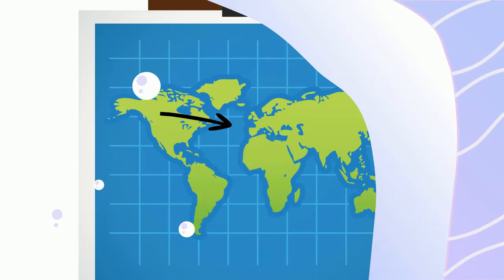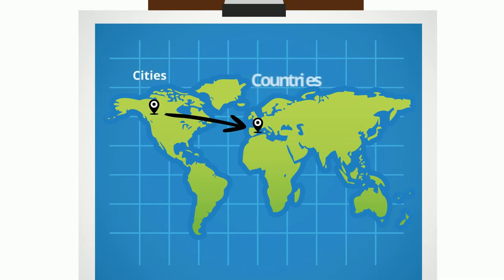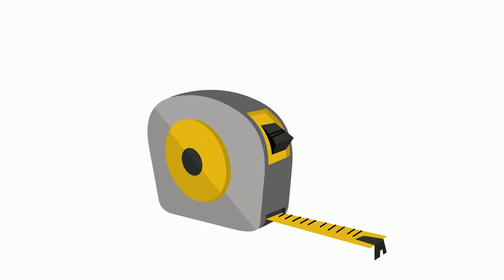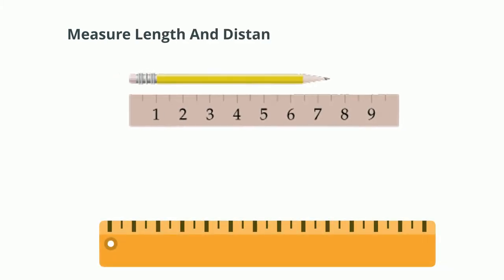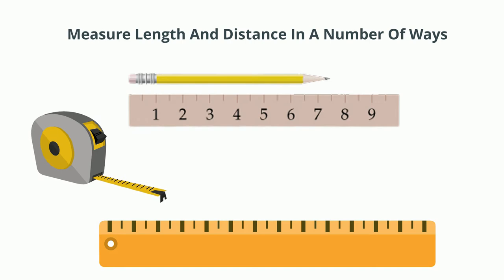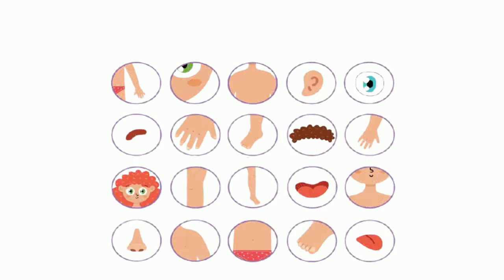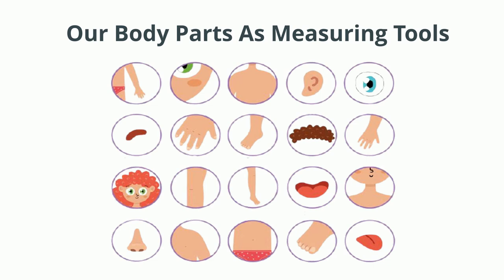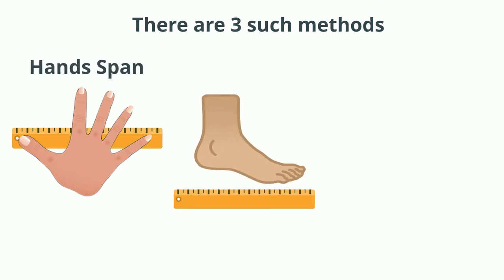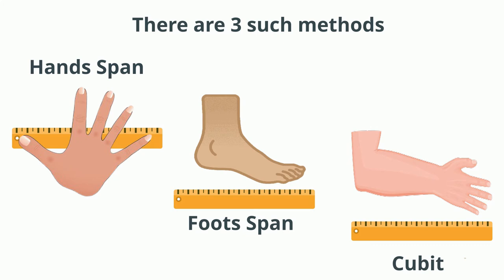How to measure length? We can measure length and distance in a number of ways and using various devices, but the easiest method is to use our body parts as measuring tools. There are three such methods for measuring length which are known as hand span, foot span, and cubit. These are used to measure lengths which are smaller.